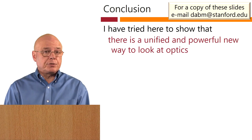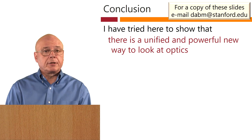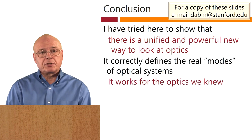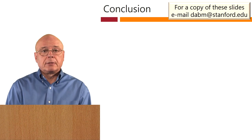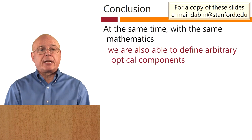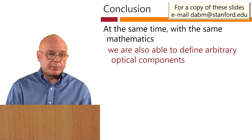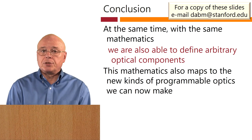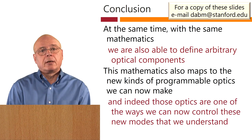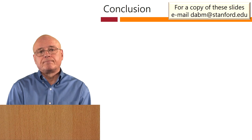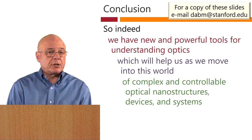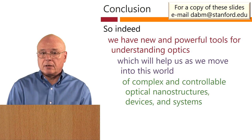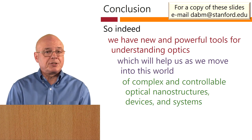So, here I have tried to show that there is a unified and powerful new way to look at optics. It correctly defines the real modes of optical systems. It works for the optics we knew, but it also works well beyond that, for nanostructures and volumes. And at the same time, with the same mathematics, we are also able to define arbitrary optical components. This mathematics also maps to the new kinds of programmable optics that we can now make. Indeed, those optics are one of the ways that we can now control these new modes that we understand. We do have new and powerful tools for understanding optics, which are going to help us as we move into this new world as a result of complex and controllable optical nanostructures, devices, and systems.